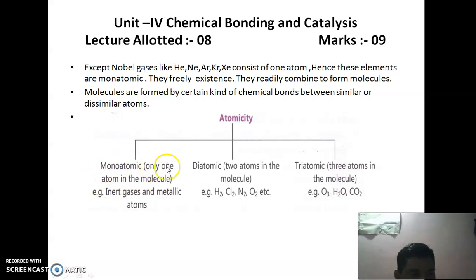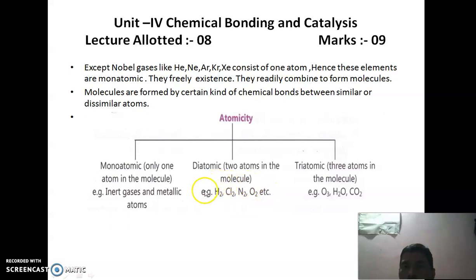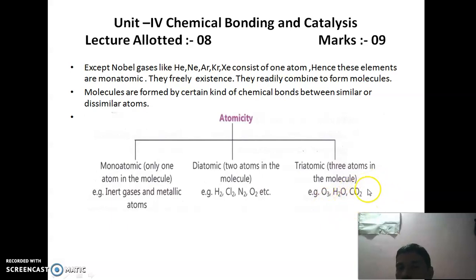Most metals and non-metals also contain only one atom in their molecules and are therefore monoatomic. Some gases like hydrogen, chlorine, nitrogen, and oxygen contain two atoms in their molecules and are called diatomic. Examples like ozone, water, and carbon dioxide or sulfur dioxide contain three atoms and are called triatomic.